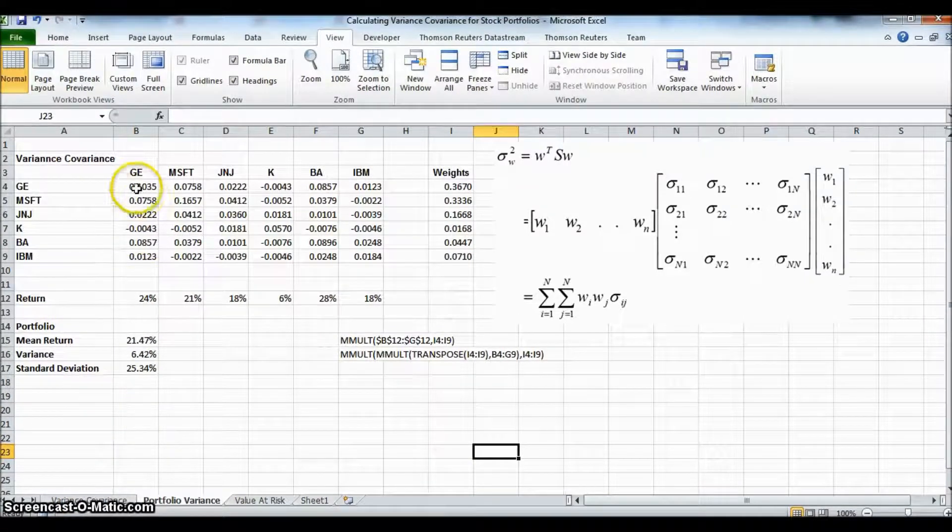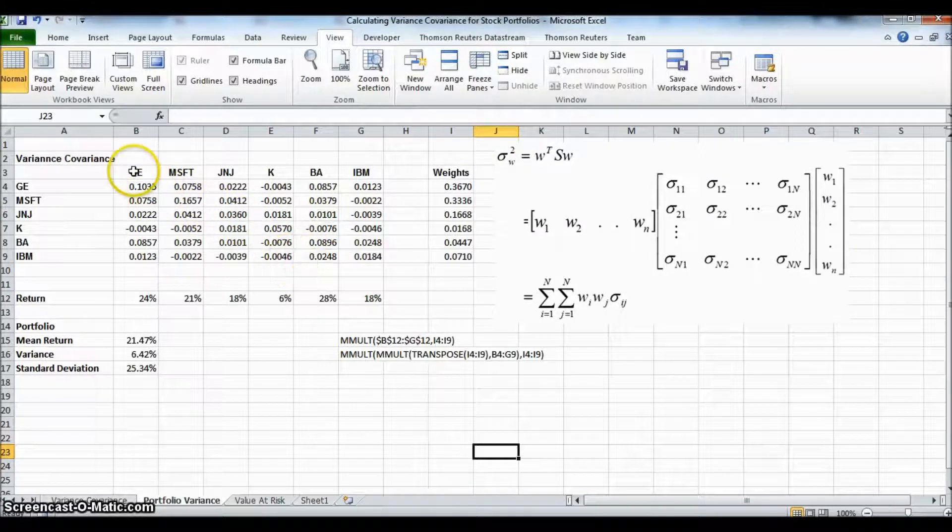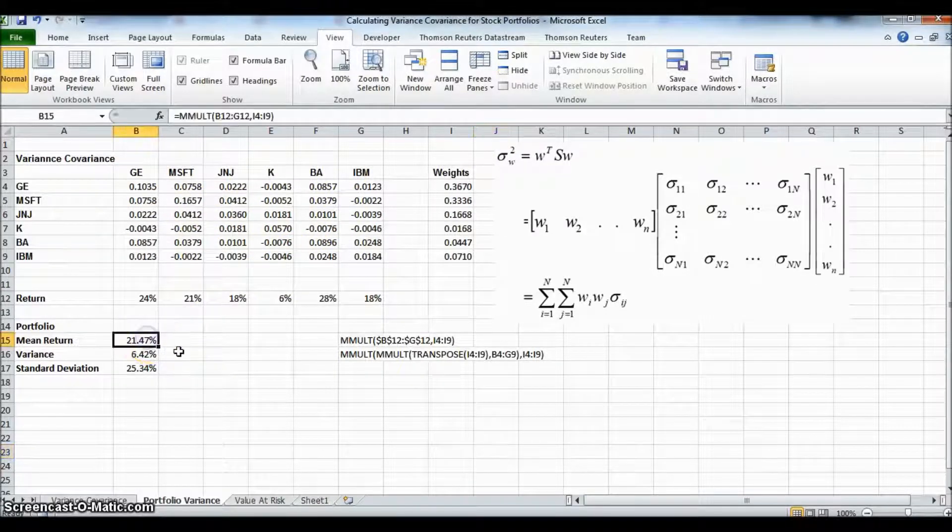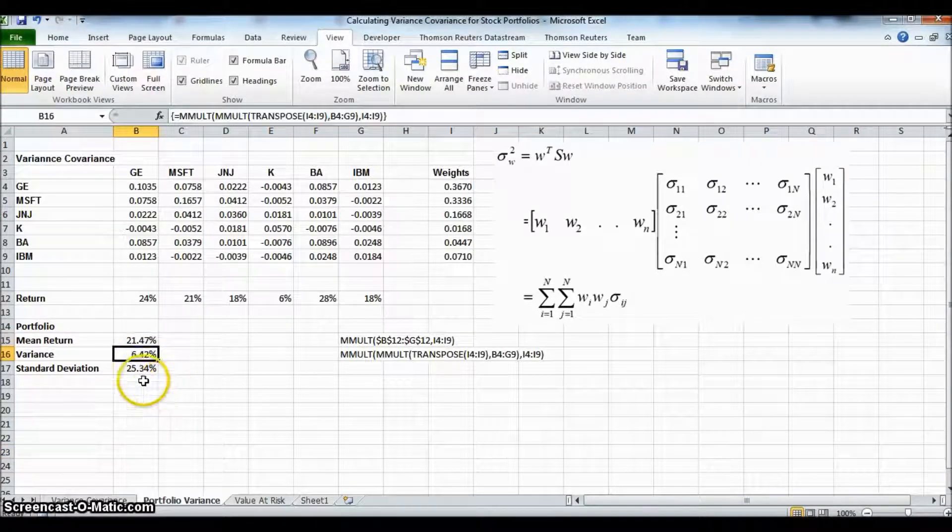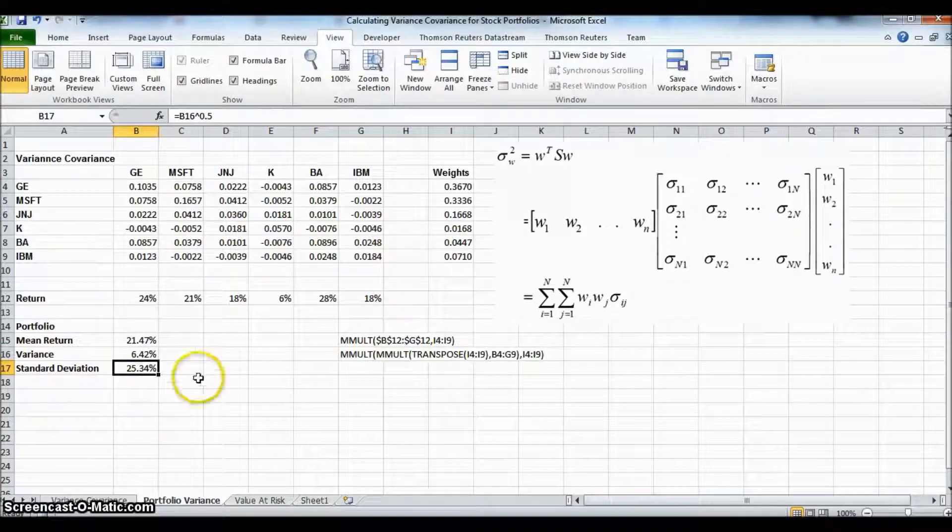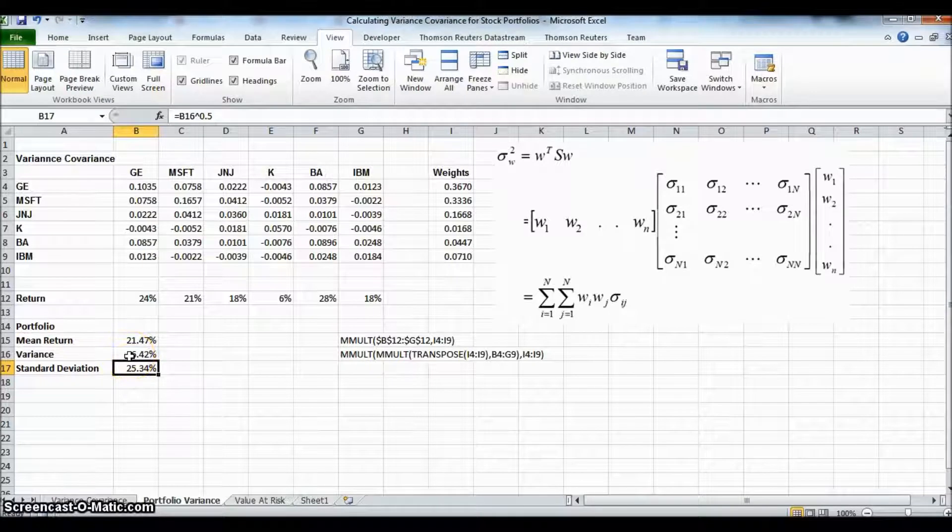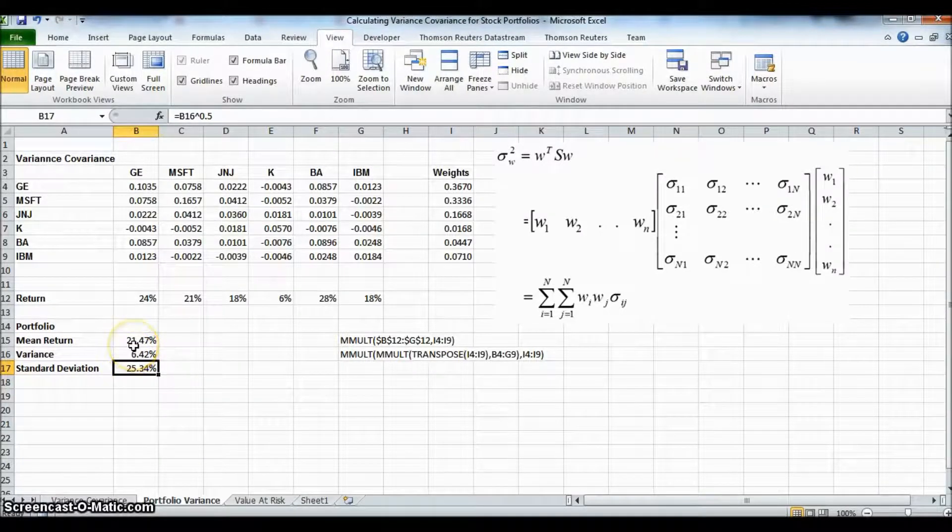Previously, we had worked out a variance covariance matrix for a group of six assets. And we estimated the mean return, the variance, and the standard deviation of the portfolio. These measures could be used to estimate value at risk at a given confidence level.